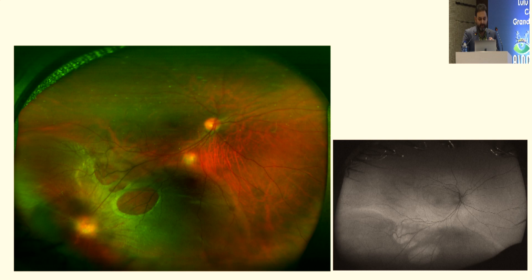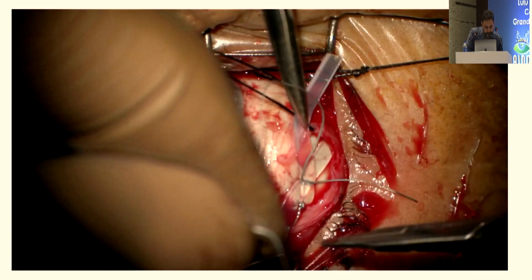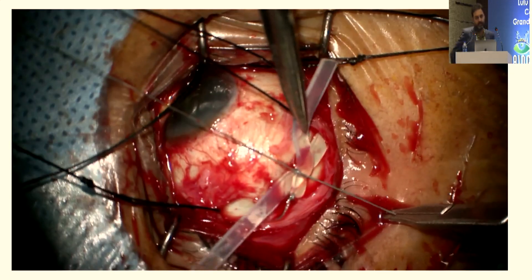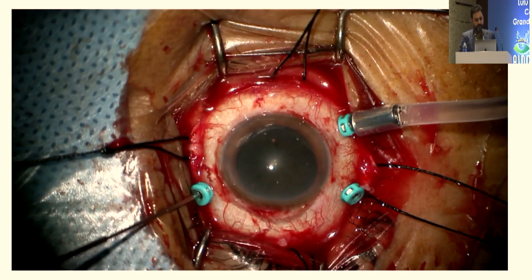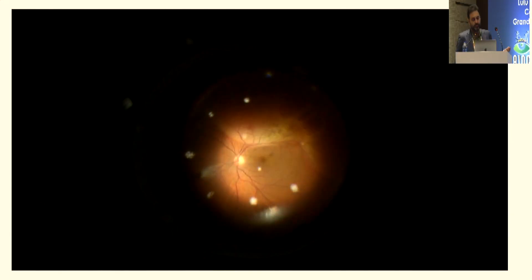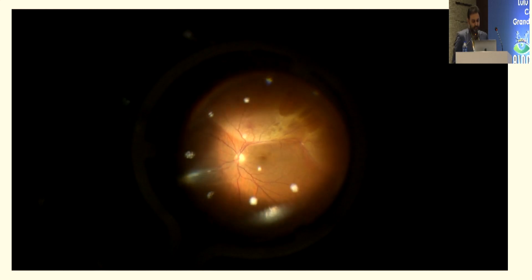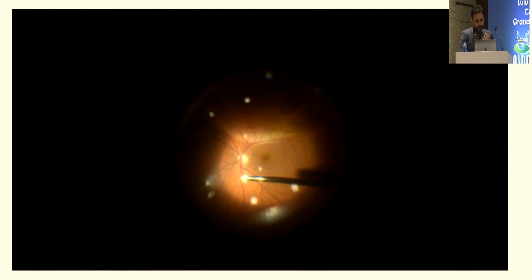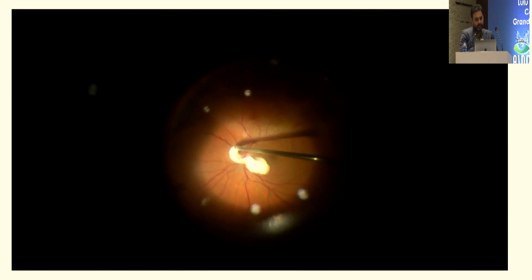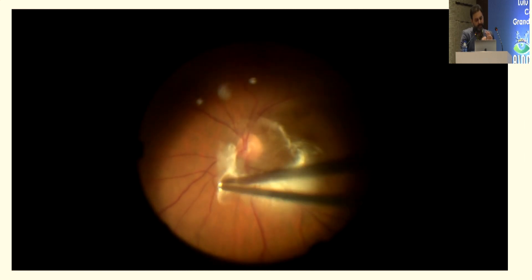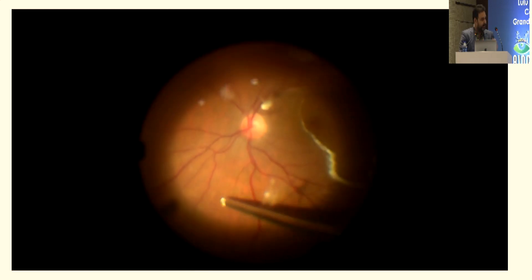This patient was planned for a combined buckle-vitrectomy. You can see me tying the 240 band, then moving on to 25-gauge three-port standard vitrectomy, which is my go-to approach for all cases. The surgery itself is not very different from other detachments, but the intraoperative video after hyaloid removal — which will be cannula-assisted — will show the inner layer and outer layer breaks and the anatomy much more clearly.